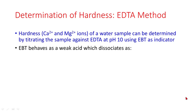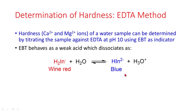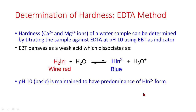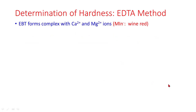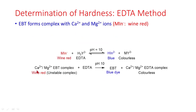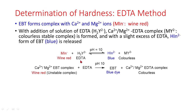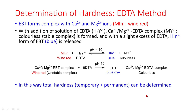EBT, which is Eriochrome Black T, behaves as a weak acid which dissociates. This is the blue form of EBT. pH 10 is maintained to have predominance of the blue form. EBT forms a complex with calcium and magnesium ions. With addition of EDTA, a calcium-magnesium EDTA complex which is colorless is formed, and with a slight excess of EDTA, the blue dye is released. In this way, hardness can be determined.